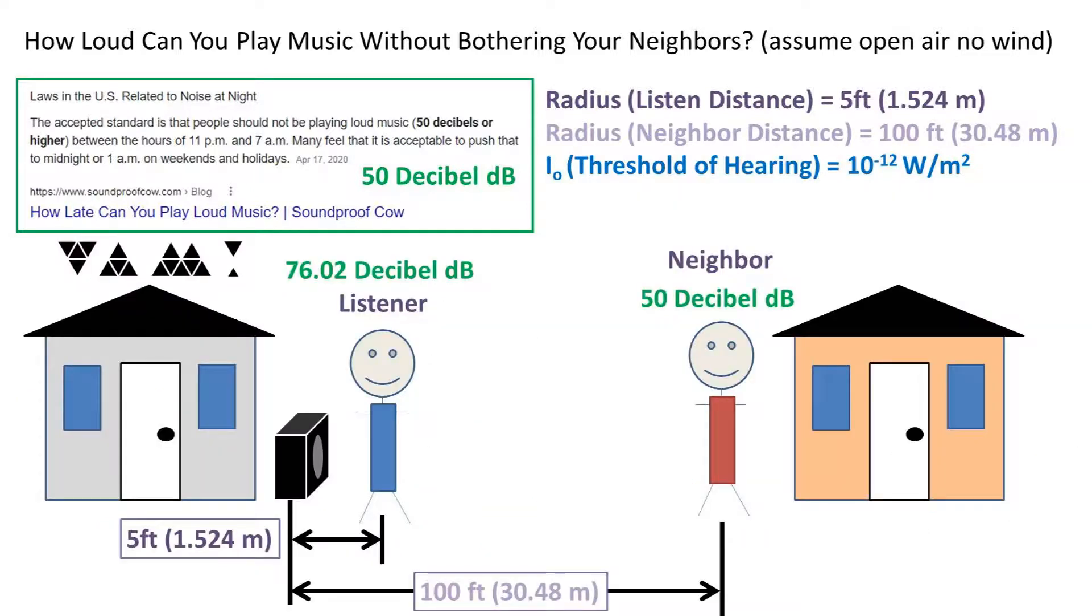So if at 5 feet from the speaker, it is at 76.02 decibels, which is about as loud as a vacuum cleaner, at 100 feet, it would be as loud as a quiet conversation, 50 decibels. I will have a link to an online calculator that I use to check my work in the description down below.